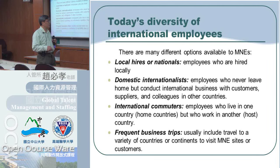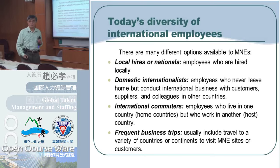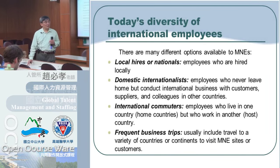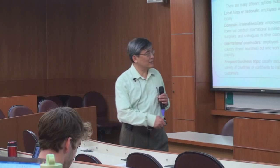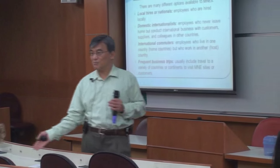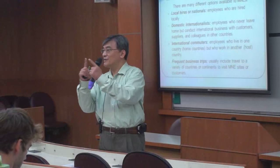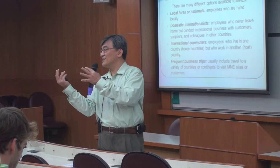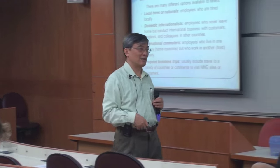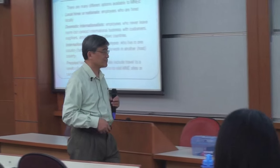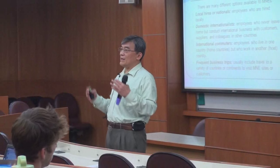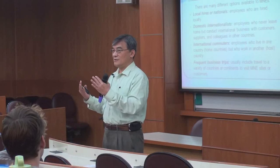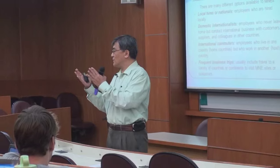International commuters are employees who live in one country but work in another. For example, Hong Kong people commute across the border and work in Shenzhen — only 40 minutes from Hong Kong to Shenzhen. Or in Canada, from Vancouver to Seattle is a two-hour drive. These are international commuters.